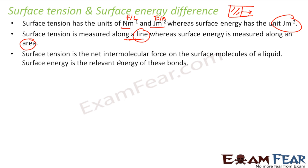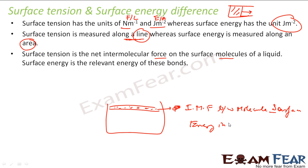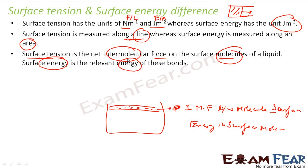Surface tension is the net intermolecular force on the surface molecules of a liquid. The net force on the surface molecules is the surface tension. Surface energy, on the other hand, is the energy which the surface molecules have. In the first case I am talking about the intermolecular force between the surface molecules; in the case of surface energy, I talk about the energy of the surface molecules.